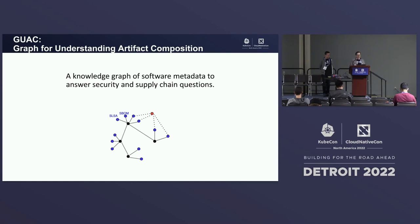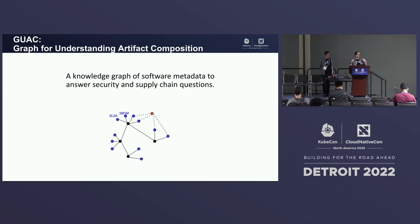So what exactly is GUAC? It's an acronym: Graph for Understanding Artifact Composition. Naming is hard. It is a knowledge graph of software metadata to answer security and supply chain questions. The idea is you have all this data — how do you actually ingest it and start asking broader questions about the problem?